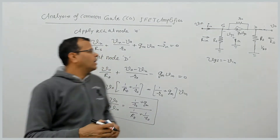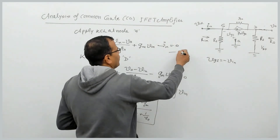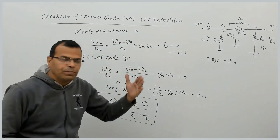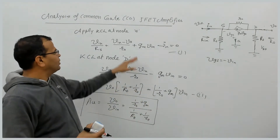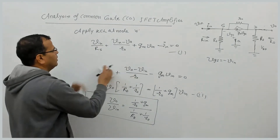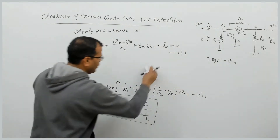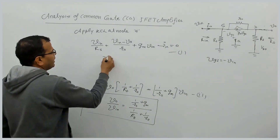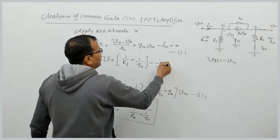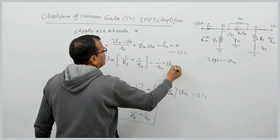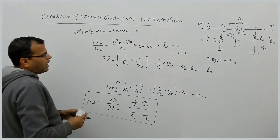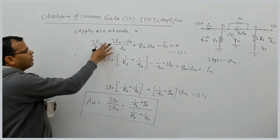We have now obtained the voltage gain of the circuit. Calling the KCL at node S equation 1 and the KCL at node D equation 2, we can also find input impedance. From equation 1 — which relates v_in, i_in, and v_naught — if we substitute v_naught in terms of v_in using the voltage gain expression, we will get the input impedance expression.